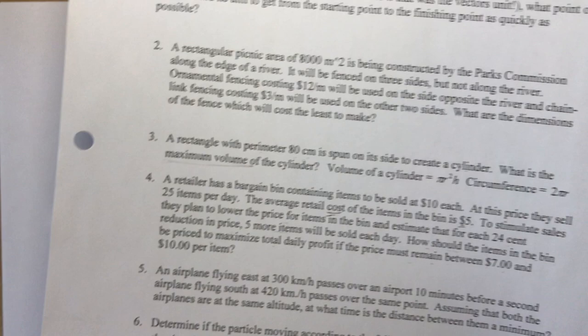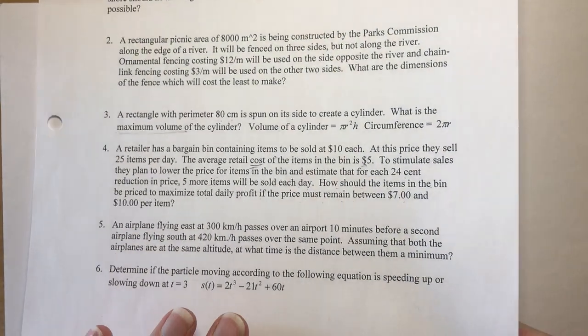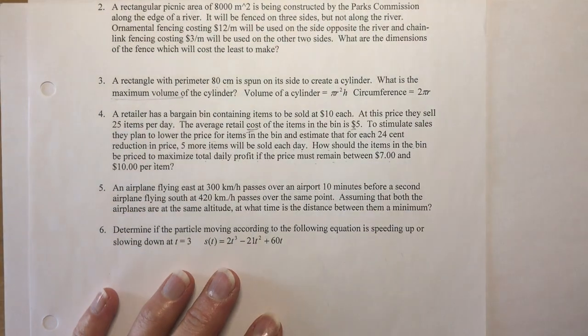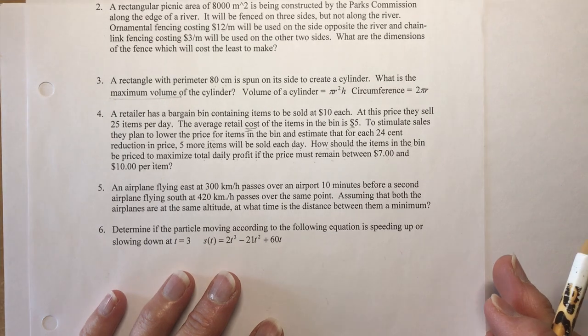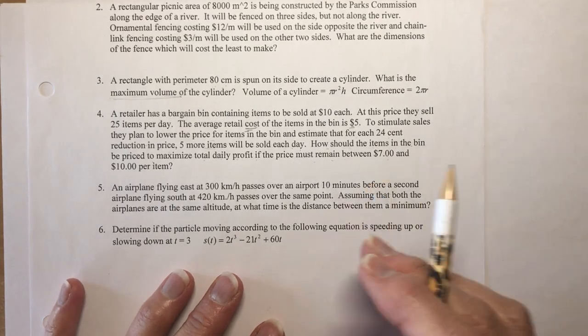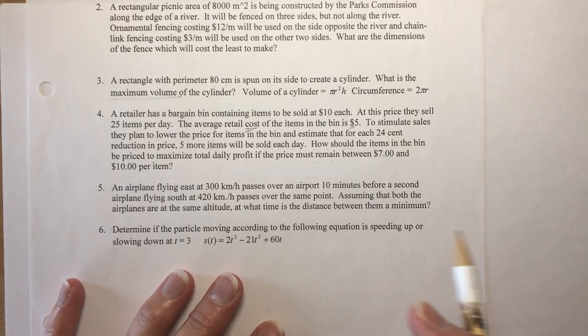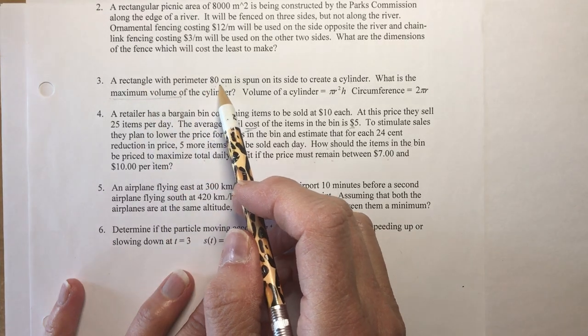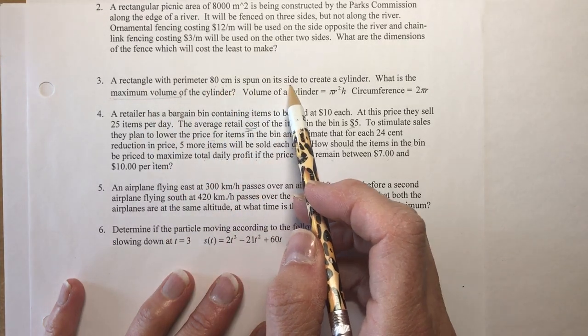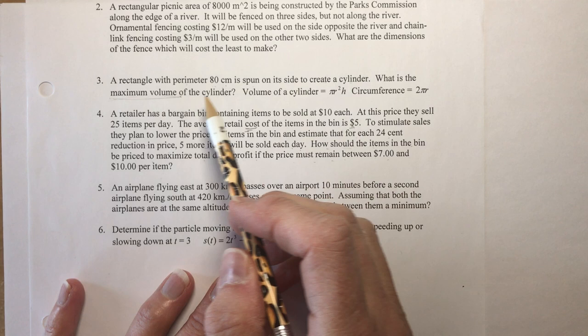This is part two of the chapter three optimization word problems test. Today I'm going to do problems three and four from this handout that I gave you. I'll put the link to it again below. Problem says: a rectangle with perimeter of 80 centimeters is spun on its side to create a cylinder. What is the maximum volume of the cylinder?